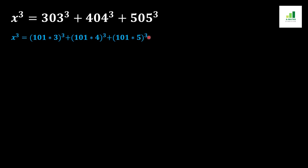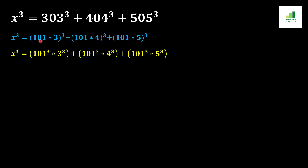In the next step, we write these values using the basic rule of algebra: if two values are in multiplication having the same power, then both values can be written individually with the same power. So 101×3 becomes 101³×3³, 101×4 becomes 101³×4³, and 101×5 becomes 101³×5³.